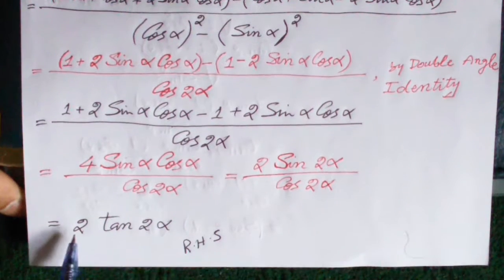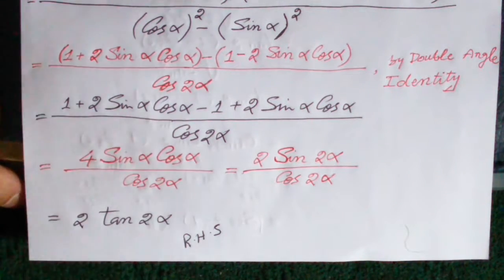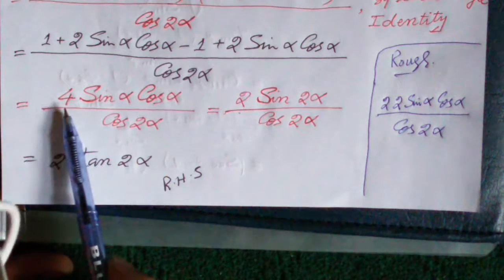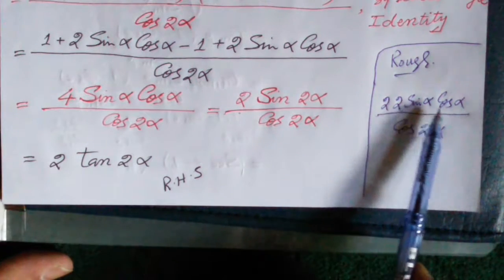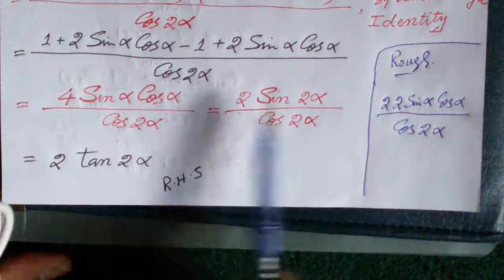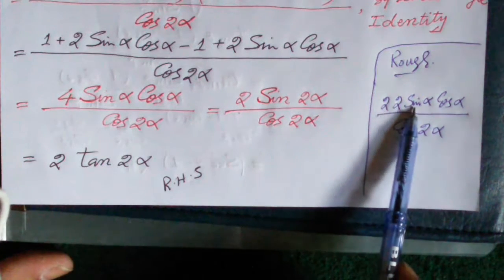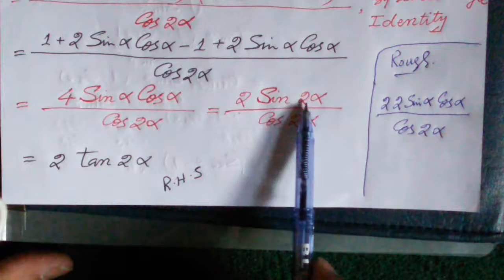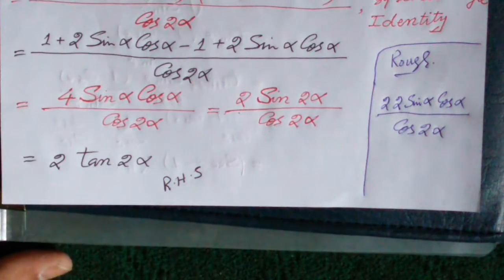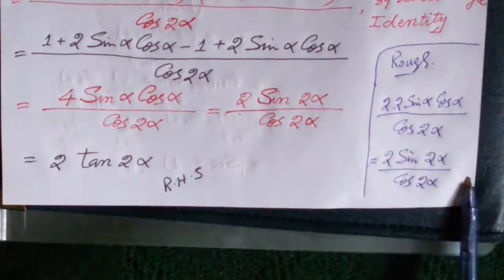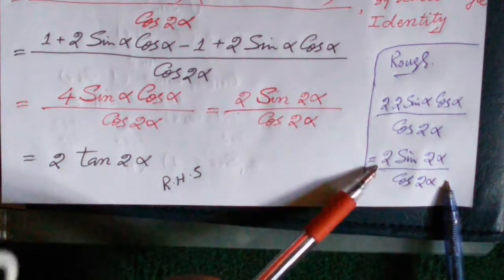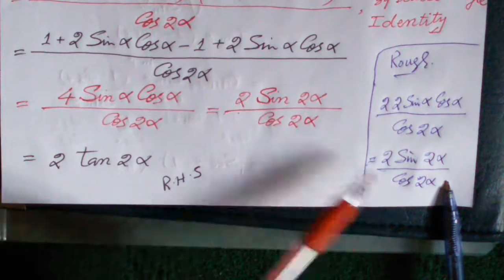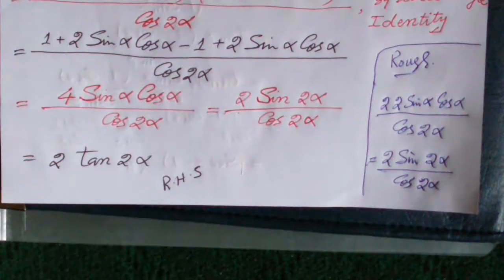After simplification, we get 2 tan 2α. The explanation: 4 sin α cos α is written as 2 × (2 sin α cos α), and since 2 sin α cos α = sin 2α, this becomes 2 sin 2α divided by cos 2α, which equals 2 tan 2α. This is the required result.